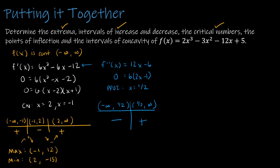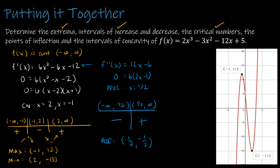Now I have my intervals of concavity. Since the concavity changes from negative to positive at x equals one half, there is a point of inflection. Plugging one half into the original function: 2 times one eighth is one fourth, minus 3 times one fourth, minus 12 times one half plus 5. This gives one fourth minus three fourths minus 6 plus 5, simplifying to negative one half minus 1, or negative three halves. So the point of inflection is at (one half, negative three halves). To summarize: local max at (negative 1, 12), local min at (2, negative 15), and point of inflection at (one half, negative three halves), where the function goes from concave down to concave up.